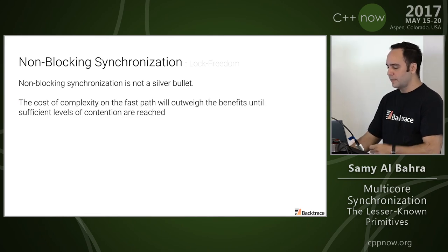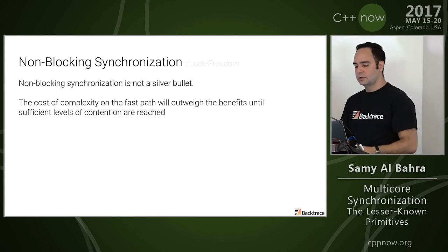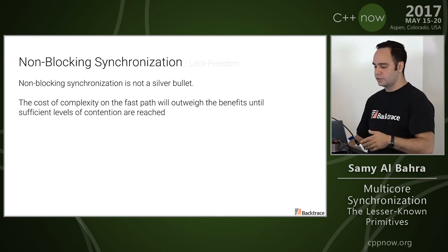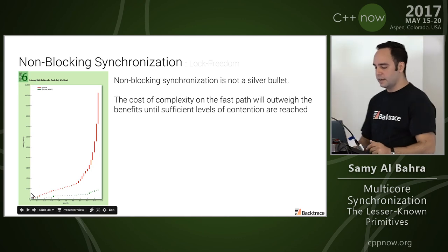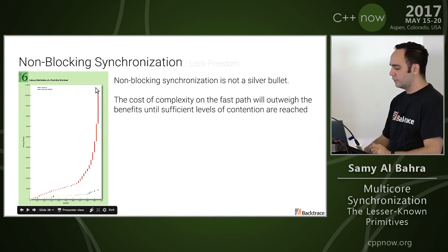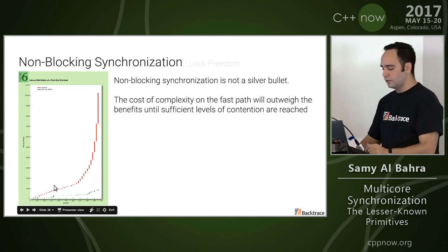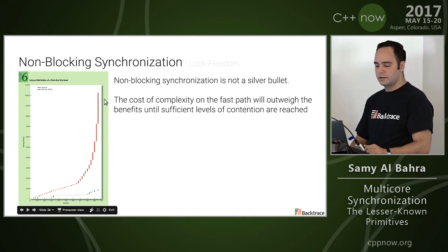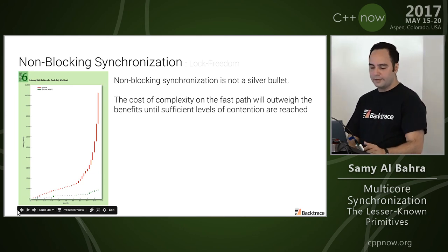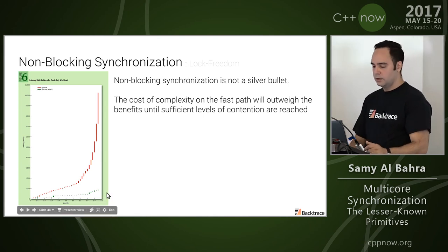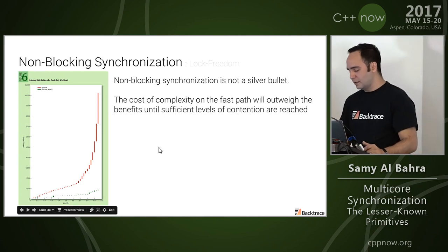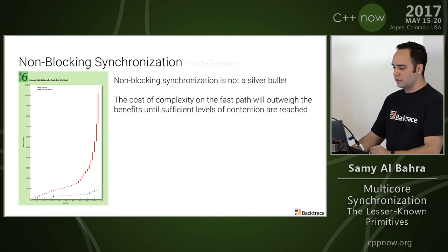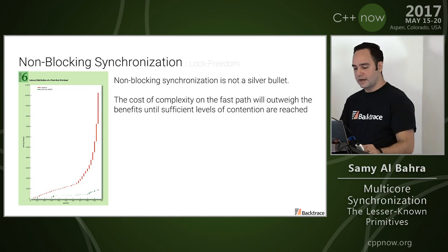Over here you have the latency distribution of a spin lock-based stack with a thread pinned per core and practically no jitter — you do have a very long tail as far as latency is concerned. The lock-free stack on the other hand has significantly tighter bounds on latency. The takeaway is: don't assume lock-free data structures will magically make your application perform better. They can provide predictability — just make sure that you do benchmark the fast path.